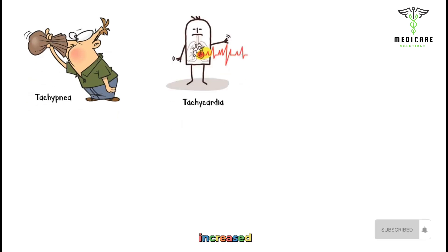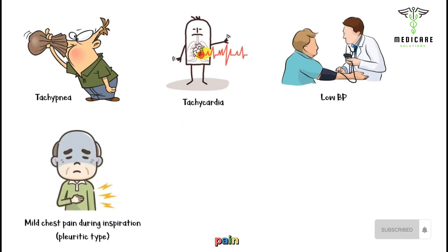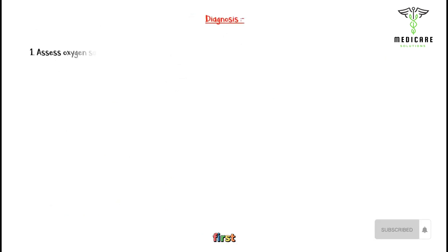Additional signs include increased respiratory rate, also called tachypnea, increased heart rate or tachycardia, low blood pressure, and mild chest pain during inspiration, known as pleuritic chest pain. Now let's discuss the diagnosis.